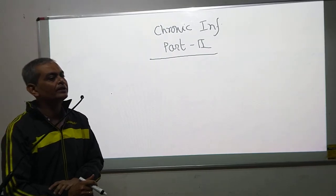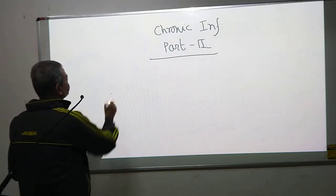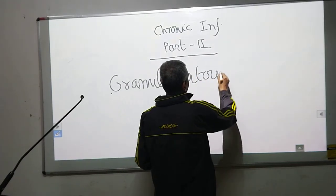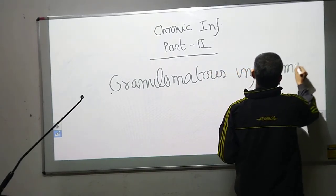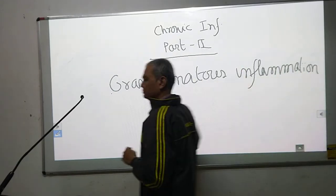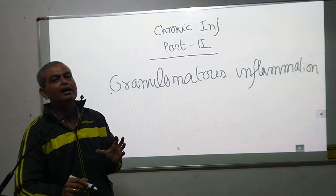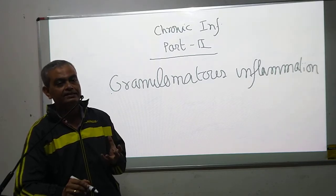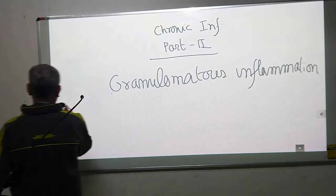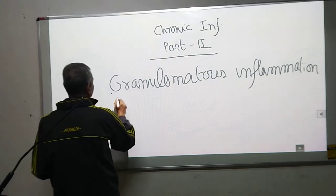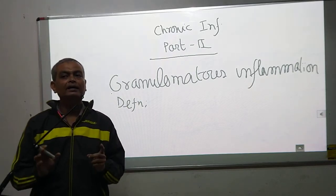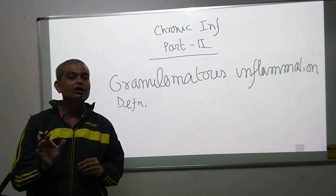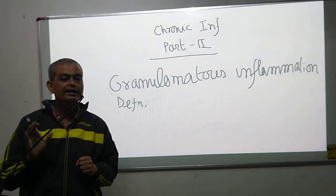We are coming into the second part of chronic inflammation, that is granulomatous inflammation. By definition, a granuloma is a circumscribed area of tissue reaction where there will be accumulation of modified macrophages, known as epithelioid cells.